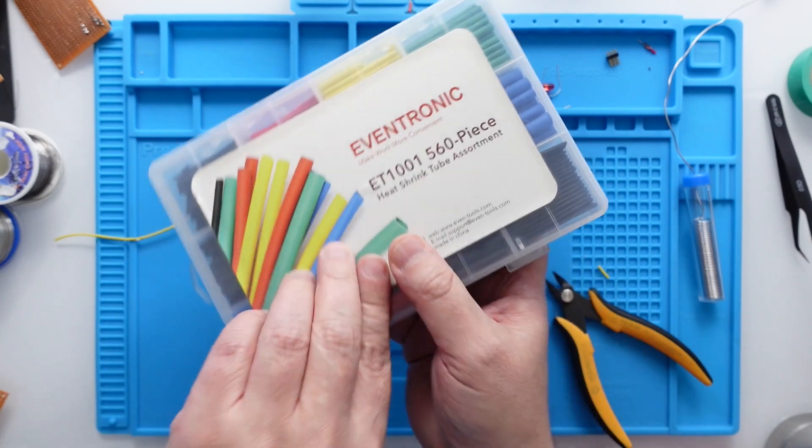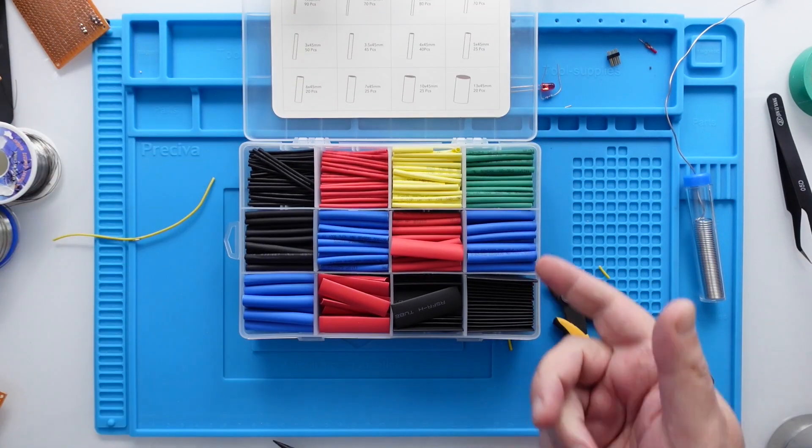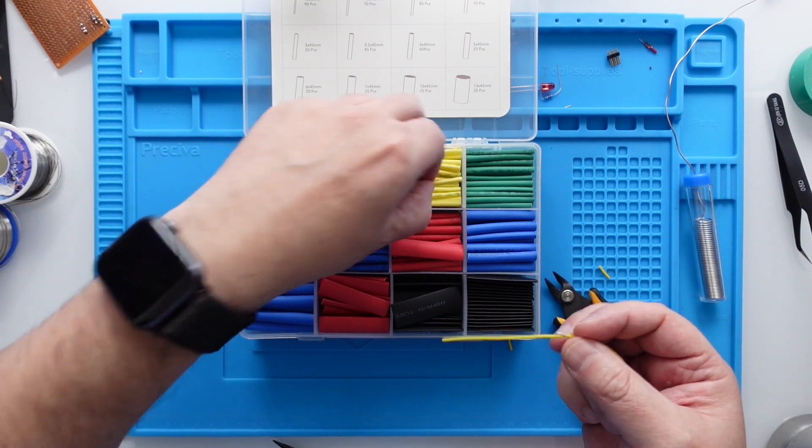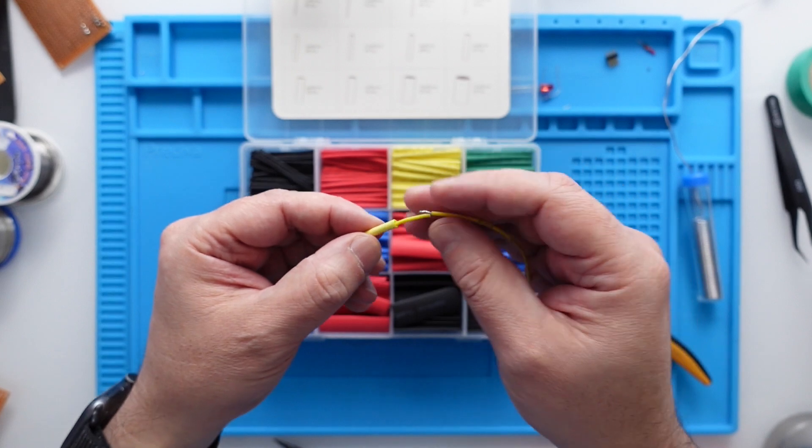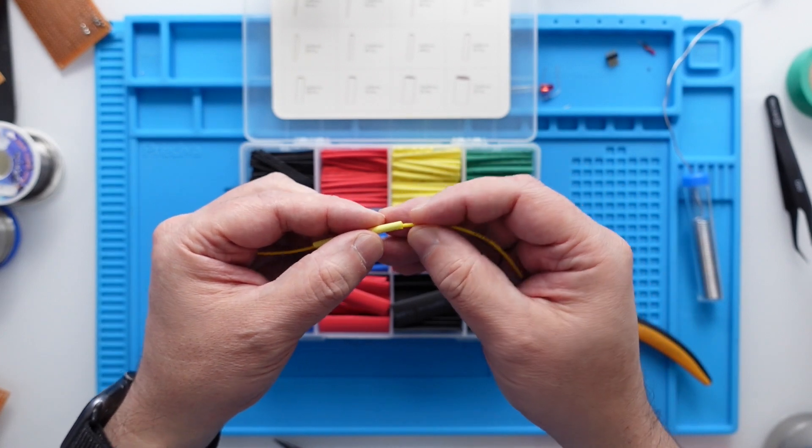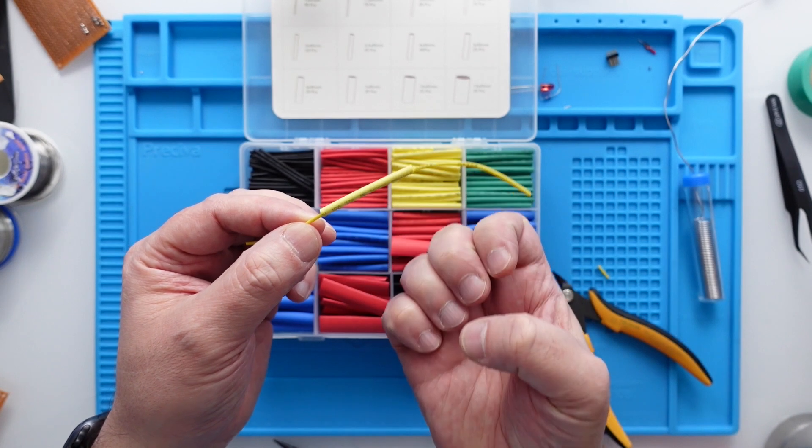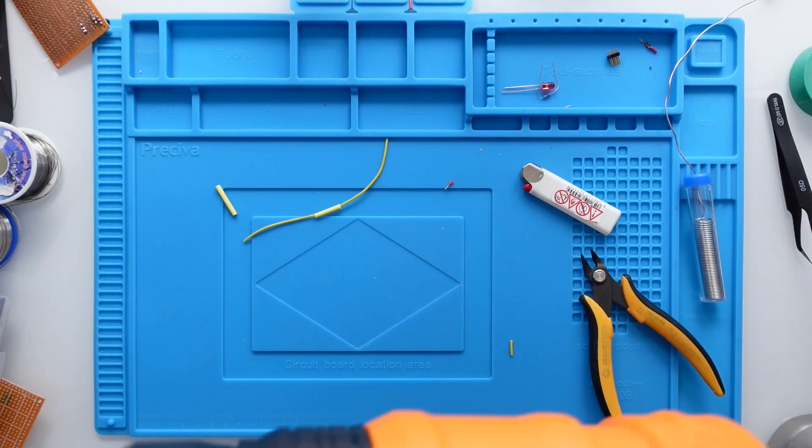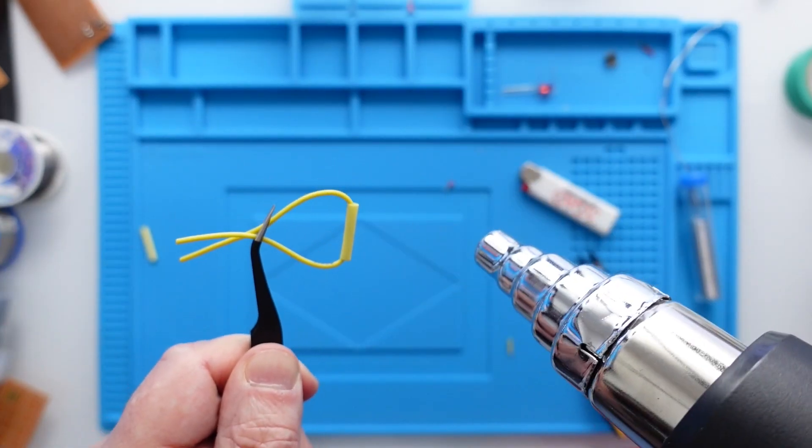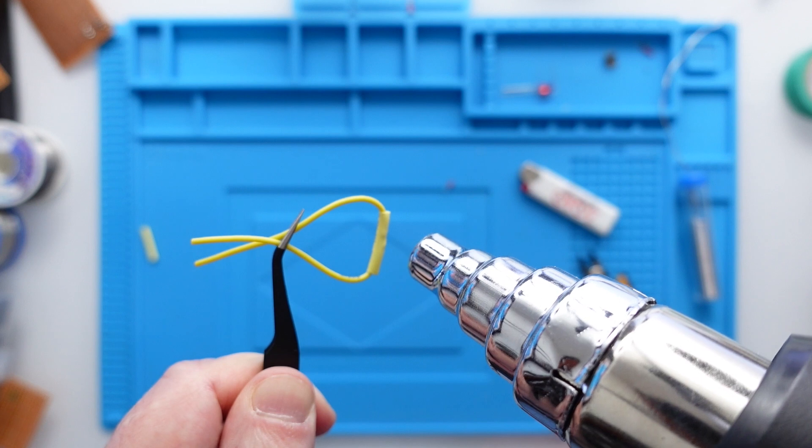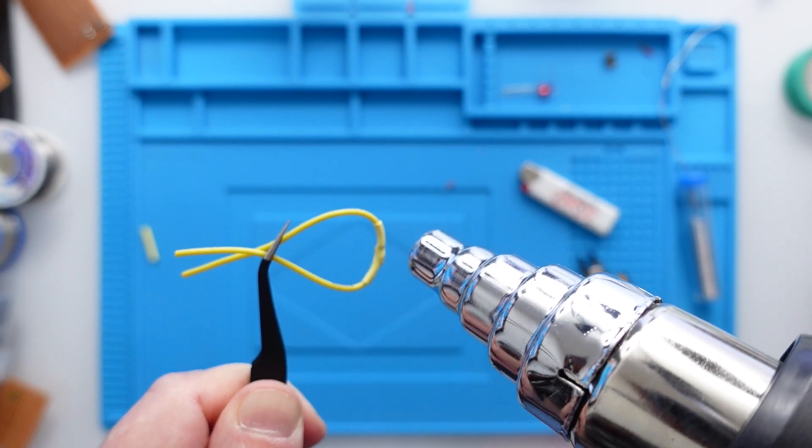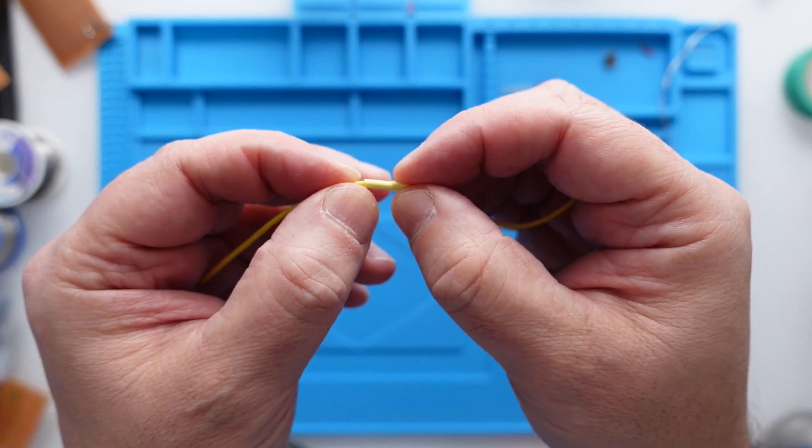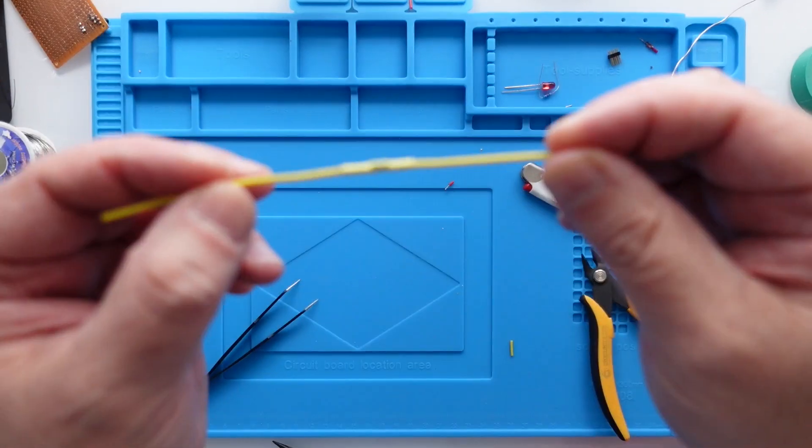You can buy something in this format, links below. So what you basically do is you put the tube around the insulation, and then when you heat it up it will shrink. Now to heat it up you can just use a normal lighter, but personally I prefer to use my heat gun. As you can see, it shrinks and covers all the exposed wire in a very nice and clean way.